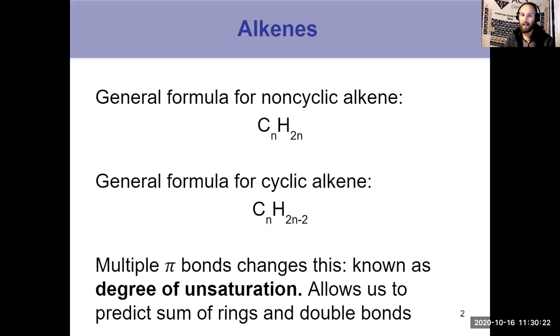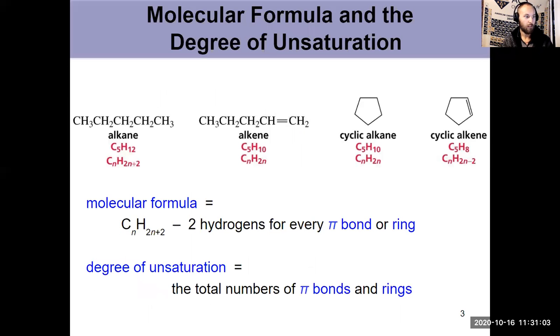So the general formula for a noncyclic alkene is CnH2n, where n is an integer. If you have a cyclic alkene, you had to lose two additional hydrogens to form the ring. So if you have a cyclic alkene, your formula is CnH2n-2. And however many pi bonds or rings you have, that's known as a degree of unsaturation. So something that has one degree of unsaturation either has a pi bond or a ring. Something that has two degrees of unsaturation could have two pi bonds, two rings, or a ring and a pi bond. It's a quick way to predict the sum of these things.